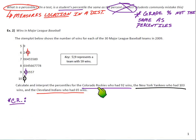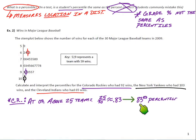So for the Rockies, I'm going to abbreviate here, Colorado Rockies, they are at or above 25 teams. If we count out from their score down, from their win total down, we've got 25 teams. So 25 out of the 30 total teams in Major League Baseball gives us approximately 0.83, if I round it to two decimal places. So that puts the Rockies at the 83rd percentile of this distribution.